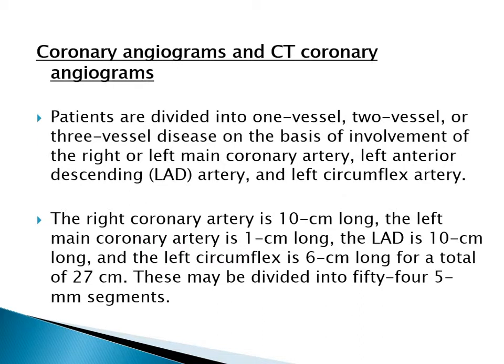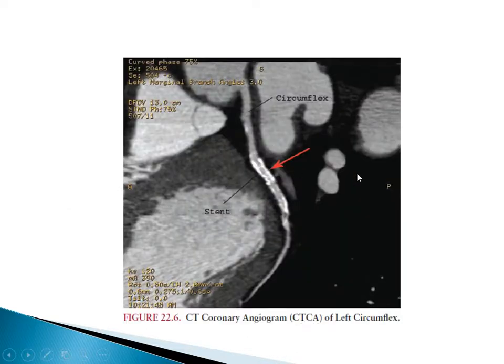Coronary angiograms and CT angiograms are divided into one vessel, two vessel, or three vessel disease on the basis of involvement of the right or left main coronary artery, left anterior descending artery, and left circumflex artery. The right coronary artery is 10 cm long, the left main coronary is 1 cm, the left anterior descending is 10 cm, and the left circumflex is 6 cm — totaling 27 cm, divided into 54 five-millimeter segments. When reporting, you must mention the percentage of stenosis and the number of 5 mm segments involved. This picture shows a CT coronary angiogram with a stent; it still shows calcification but flow is patent inside.